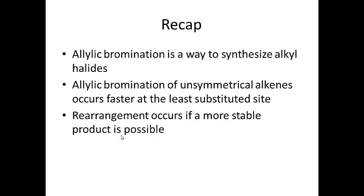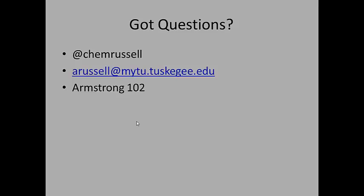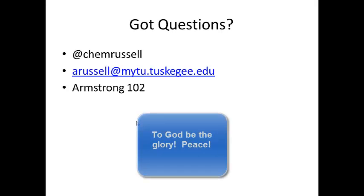Let's recap: allylic bromination is a way to synthesize alkyl halides. Allylic bromination of unsymmetrical alkenes occurs faster at the least substituted site. Rearrangement occurs if a more stable product is possible. If you have questions, you can reach me by tweet, email, or drop by the office.